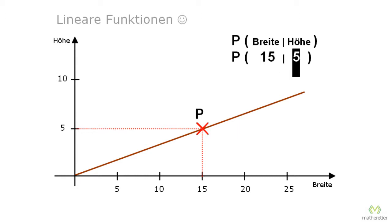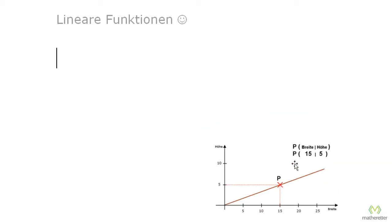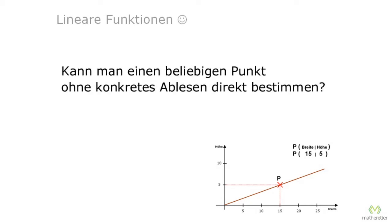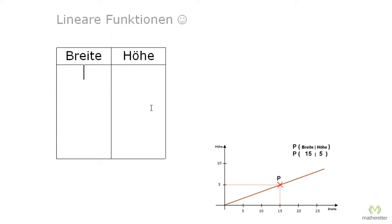Let's take a look at that. We make our graph smaller so we have a bit more space. The question that arises for us now: can one directly determine any point without reading from the graph? We want to answer this question. We now clarify and first of all give ourselves a table of values — left is the width, right is the height.